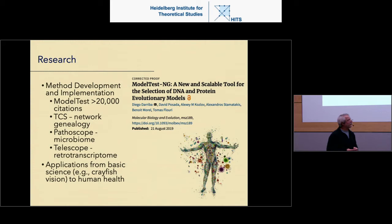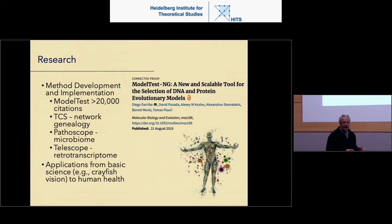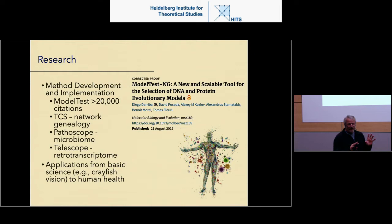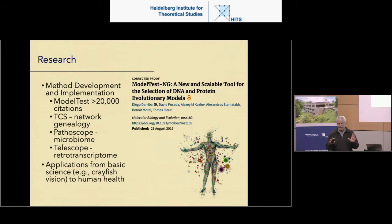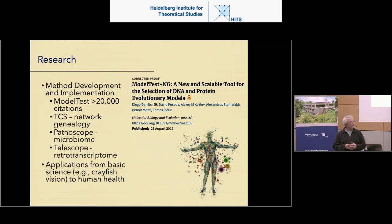In general, my lab is very interested in method development and testing, and then implementing and applying those methods to a wide variety of study systems. Our principal organismal study systems have been crustaceans for classic molecular systematics, especially freshwater crayfish. In Germany there's a special marbled crayfish — a weird parthenogenetic crayfish that seems to have originated through the aquaculture trade and been unfortunately spread around the world. As a parthenogenetic individual, it can reproduce all by itself, so it has a particular predilection for invasions.